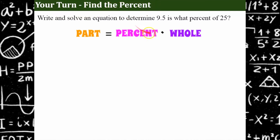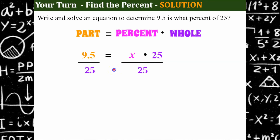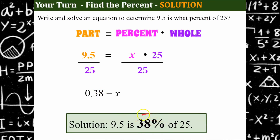Now you're going to find the percent — that's what you don't know, so the percent becomes x. Translate this into a mathematical equation and solve. Our solution: the part is 9.5, equal to our percent x, multiplied by the whole 25. To solve for x, since it's being multiplied by 25, divide both sides by 25. 9.5 ÷ 25 = 0.38. To answer the question, that is 38 percent. So 9.5 is 38 percent of 25.